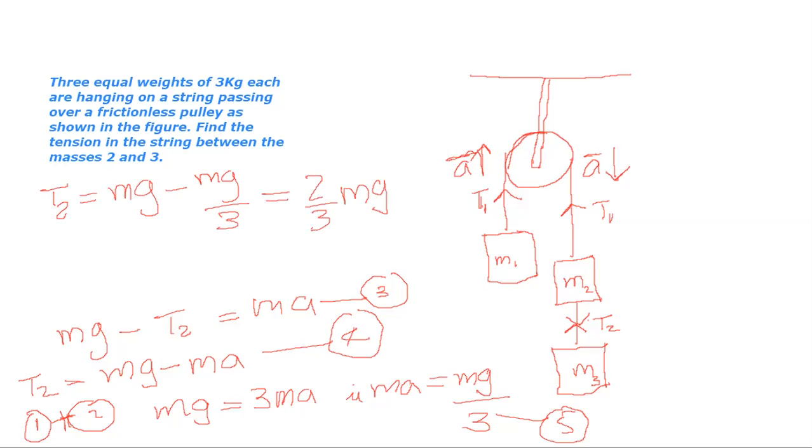So T2, the tension between the masses 2 and 3, is 2/3 times Mg. We know that the mass m is 3 kilograms, so 2/3 times 3 times 10 equals 20 Newtons. So the tension between the masses M2 and M3 is 20 Newtons. We have done our problem.